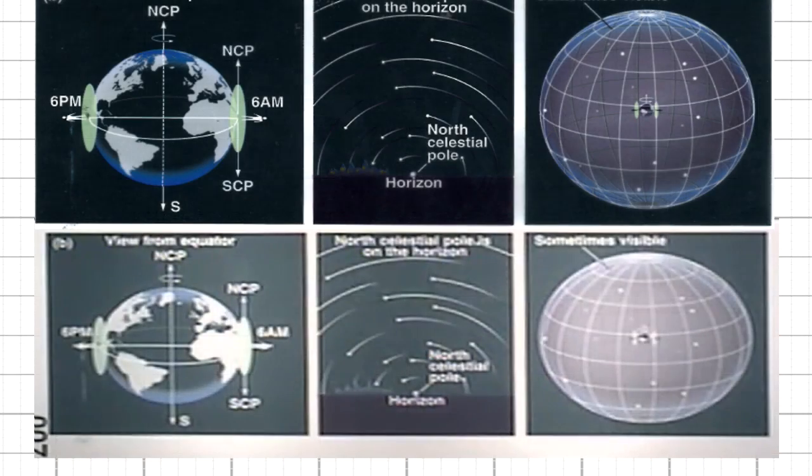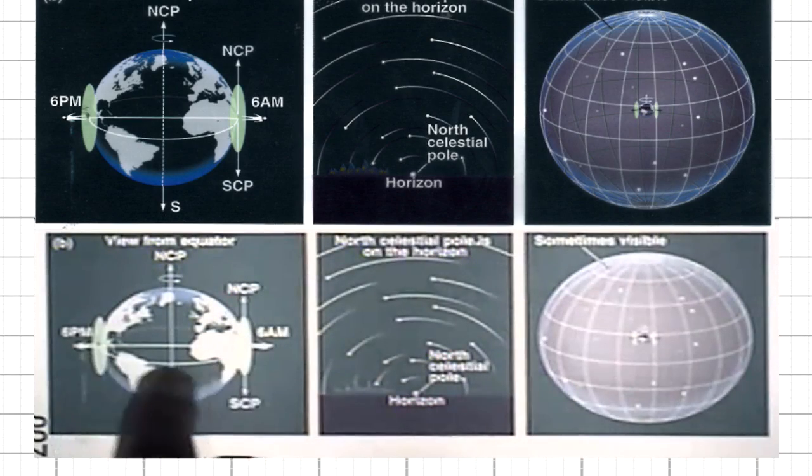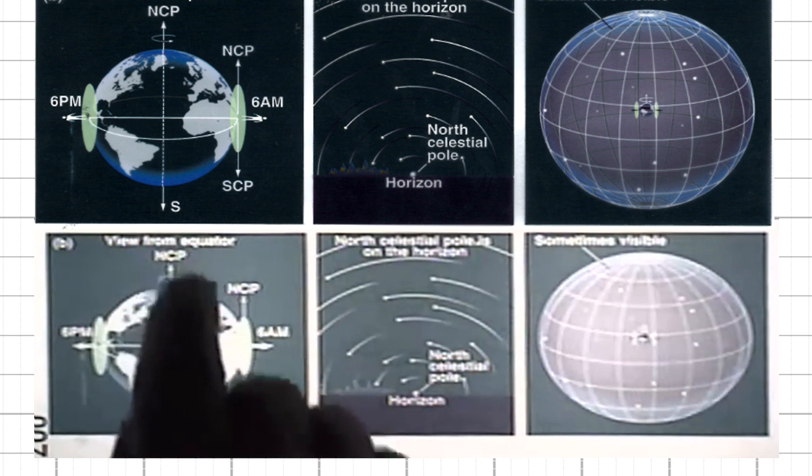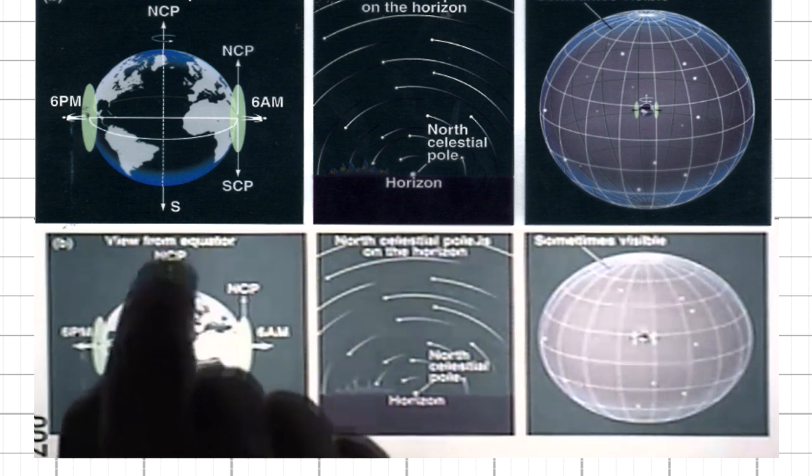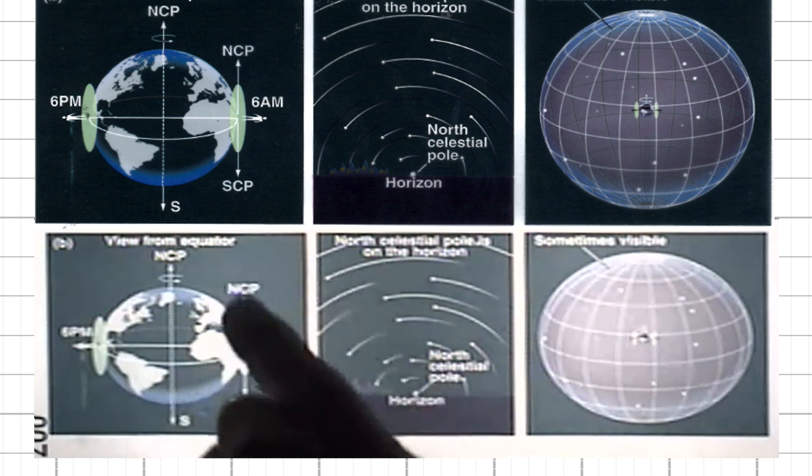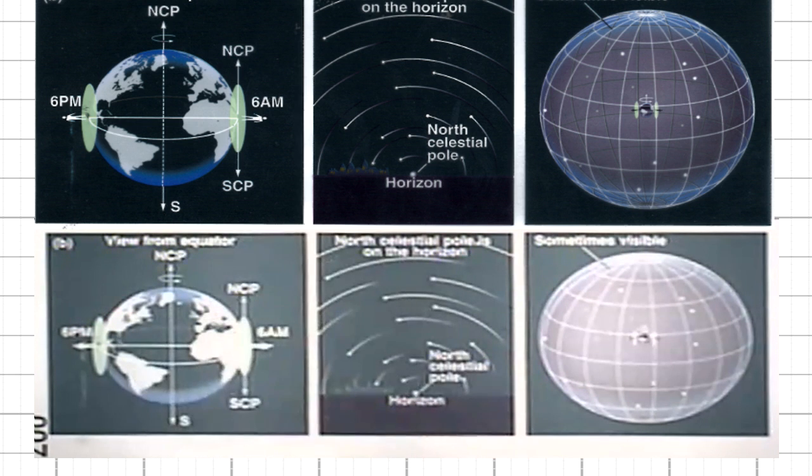Here is an observer located on the equator. The Earth is spinning along the north-south axis. This arrow points to the North Celestial Pole. This is the same direction to the North Celestial Pole.